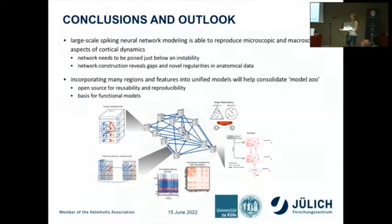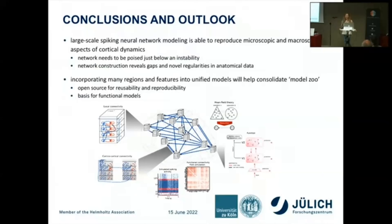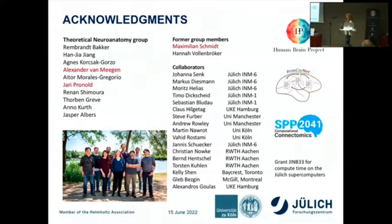In summary, with our large-scale spiking neural network models we are able to reproduce aspects of microscopic and macroscopic resting state dynamics. The network needs to be placed just below an instability. Constructing these models reveals gaps in the data and statistical regularities that provide insight into cortical organization. We hope this type of modeling will help consolidate the model zoo and form a basis for functional models. I want to thank in particular Maximilian Schmidt for the macaque model, and Alexander von Meigen and Jari Pronold for the human model.